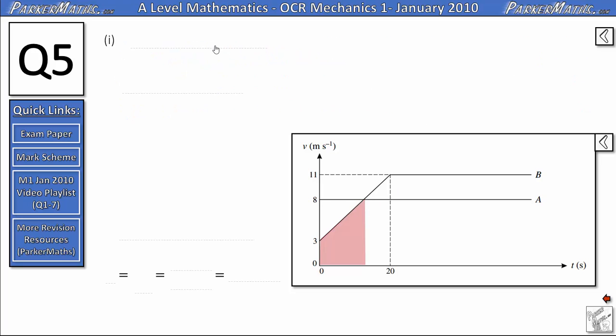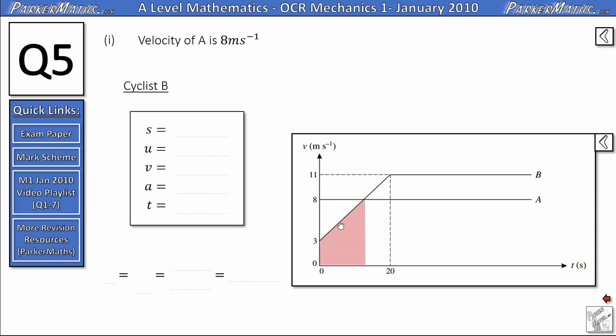We will start by thinking about our equations of motion. We know cyclist A has a velocity of 8 metres per second and for cyclist B we can use the SUVAT equations. We know the initial velocity is 3, the final velocity is 8 metres per second. For the acceleration we can work it out in a fairly straightforward manner. If it is a straight line that implies constant acceleration and all that means is we look at how much the velocity has changed and how long that took. The change in velocity divided by the change in time.